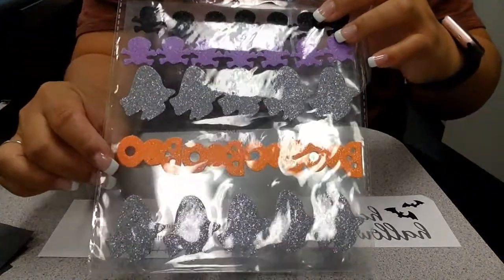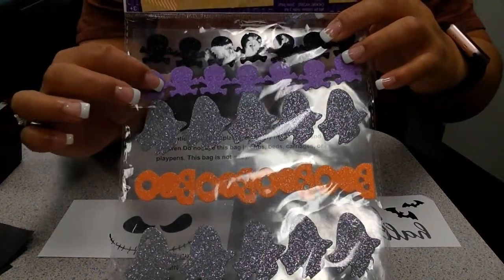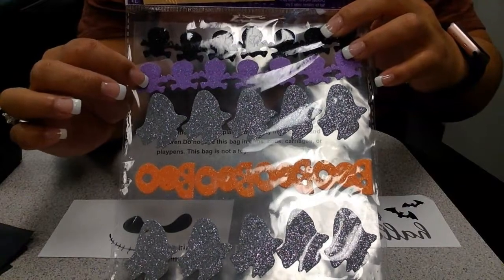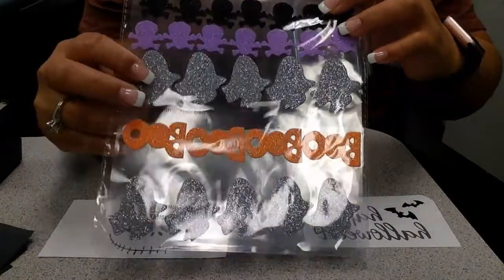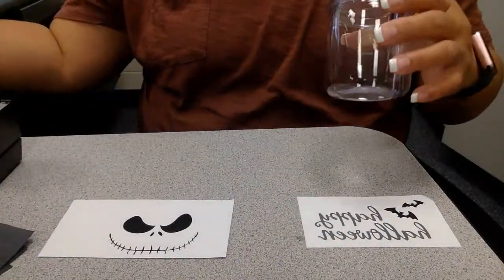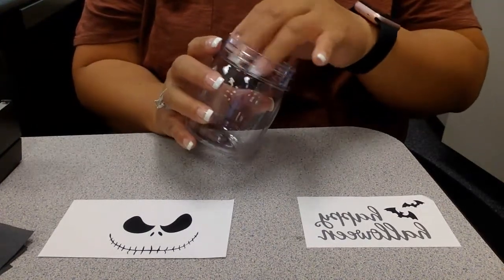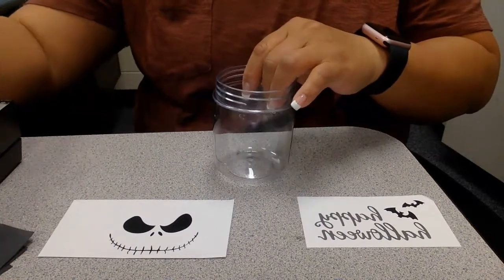You can also take the stickers and these little guys have eyes where you can take them out, which is really cool because you can put the glow-in-the-dark paint on the inside of the eyes so that it'll glow in the dark. It's easier to handle when you open the lid.